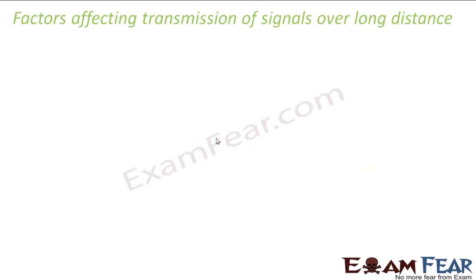So why do we need modulation? That is a very important question. Why do we actually need an additional wave called a carrier wave — why do we at all need a high frequency wave? When I talk about the example of the letter, you clearly understand why we needed the train because it saves a lot of time. Now let us try to understand it in terms of signal transmission. There are various factors which can affect the transmission of signals. Let us look at the major factors which affect signal transmission over long distances.